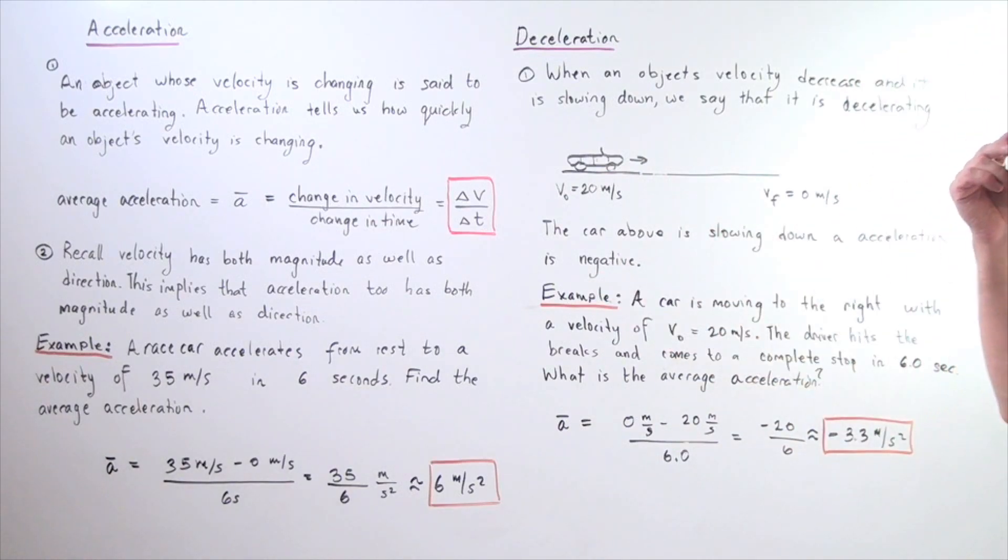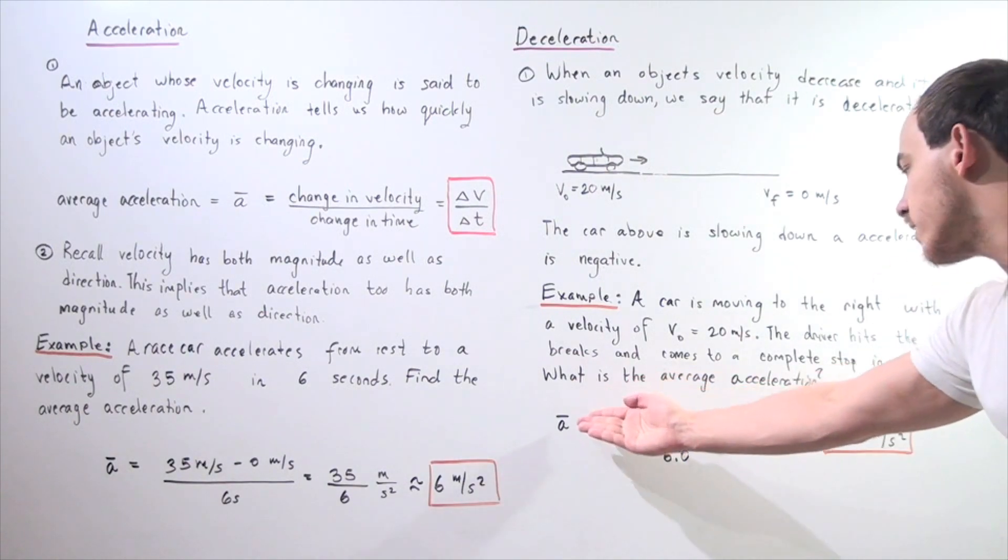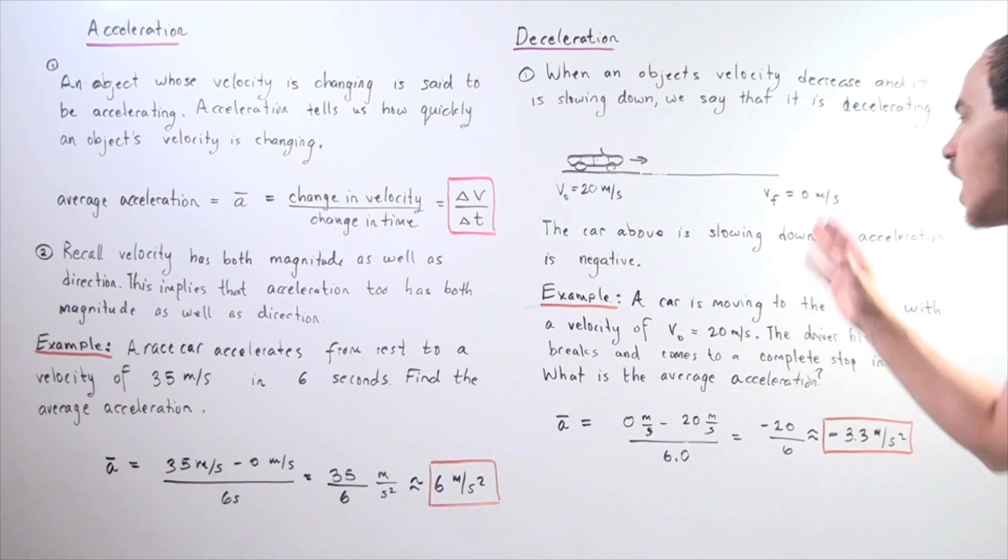Let's look at the following example. A car is moving to the right with a velocity of 20 meters per second as shown above. The driver hits the brakes and comes to a complete stop in 6 seconds. What is the average acceleration of our car? We want to find what the deceleration is.